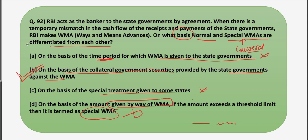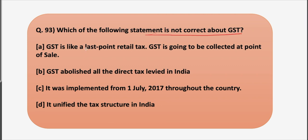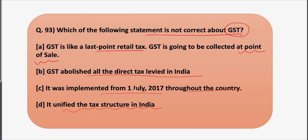Moving on to the next question, which is also very interesting. The question is: which of the following statements is not correct about GST? Option A: GST is like a last-point retail tax, collected at the point of sale. Option B: GST abolished all the direct taxes levied in India. Option C: It was implemented from 1st July 2017 throughout the country. Option D: It unified the tax structure in India. The correct answer is option B — that GST abolished all the direct taxes levied in India.